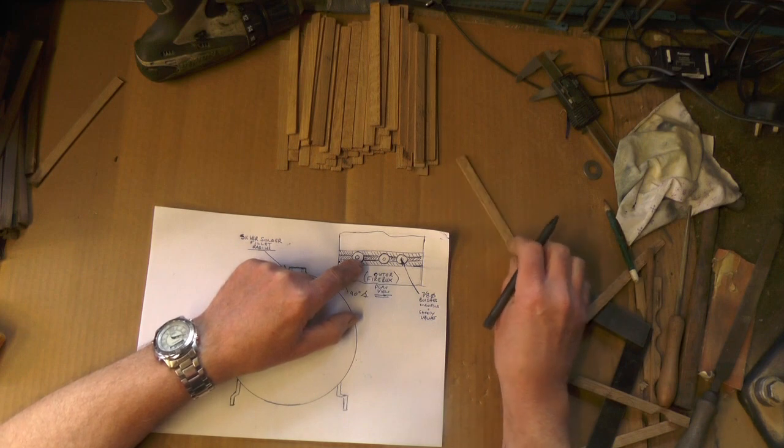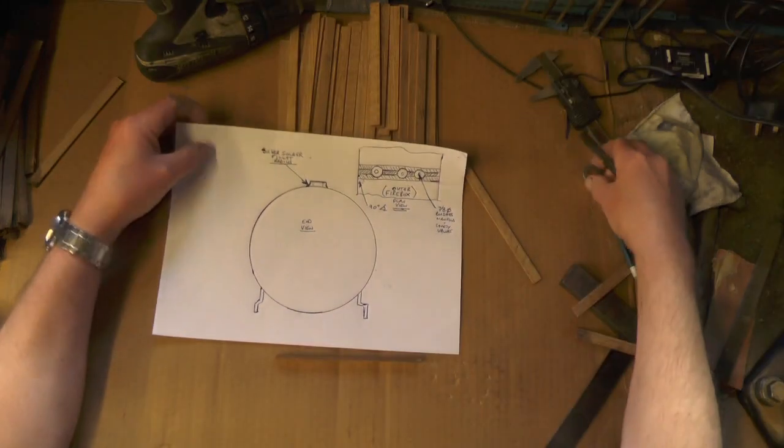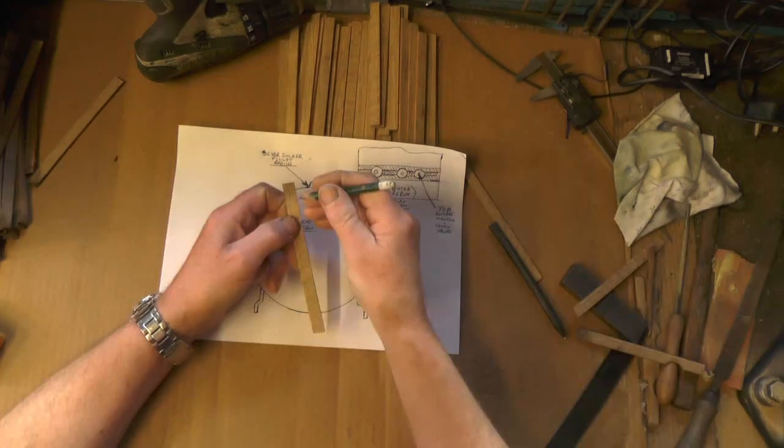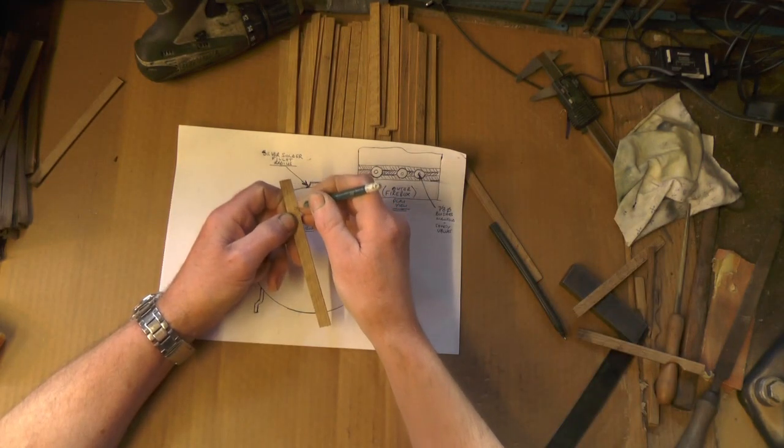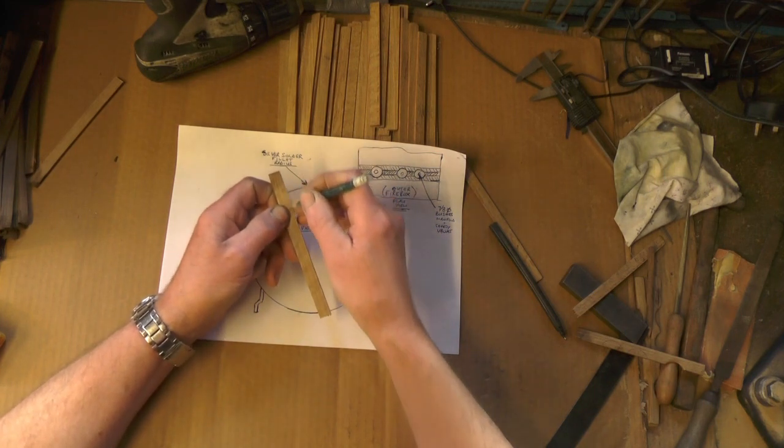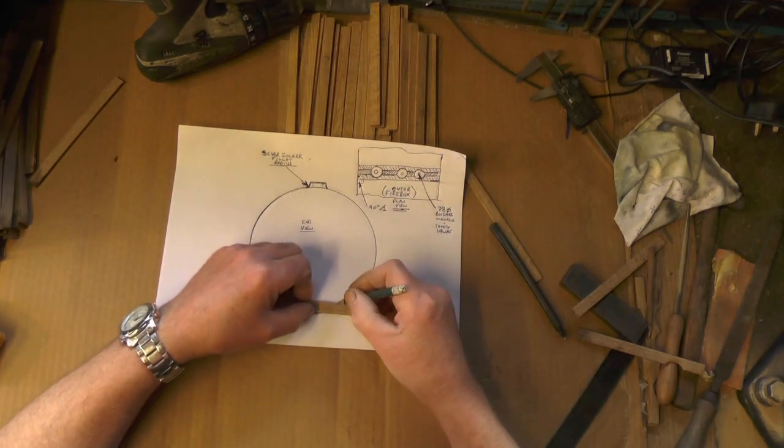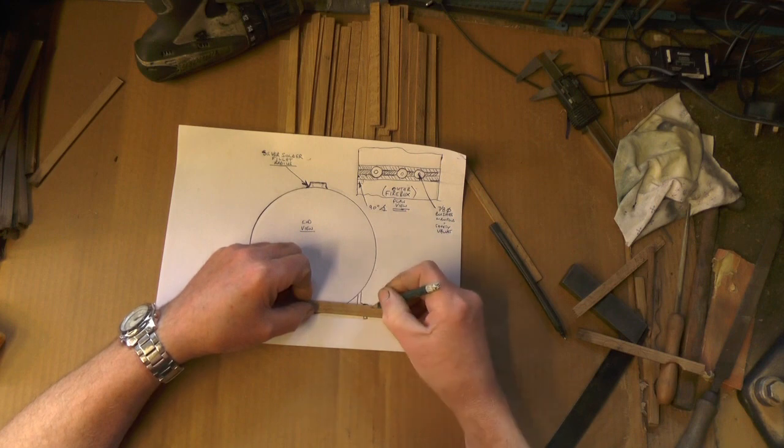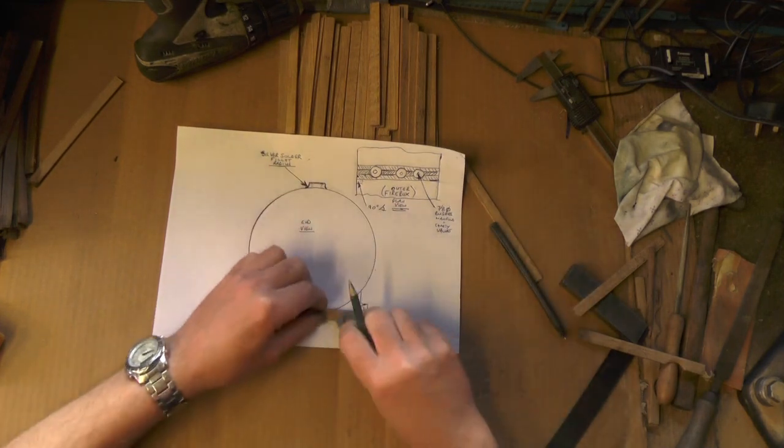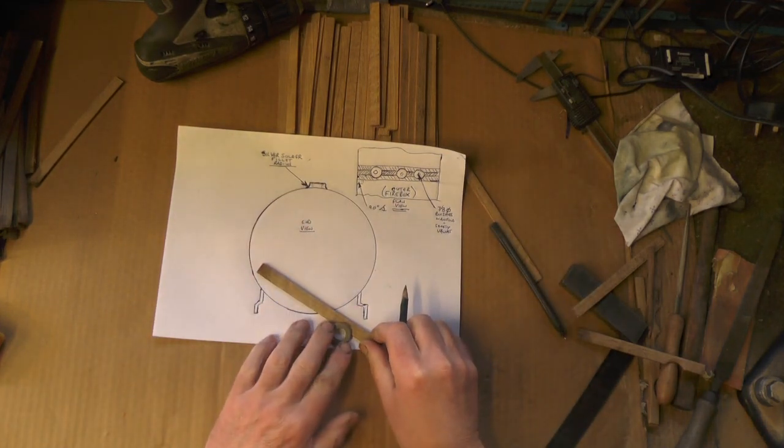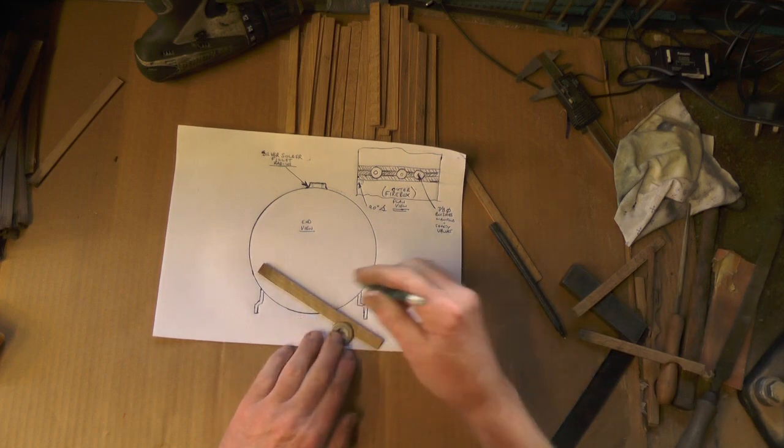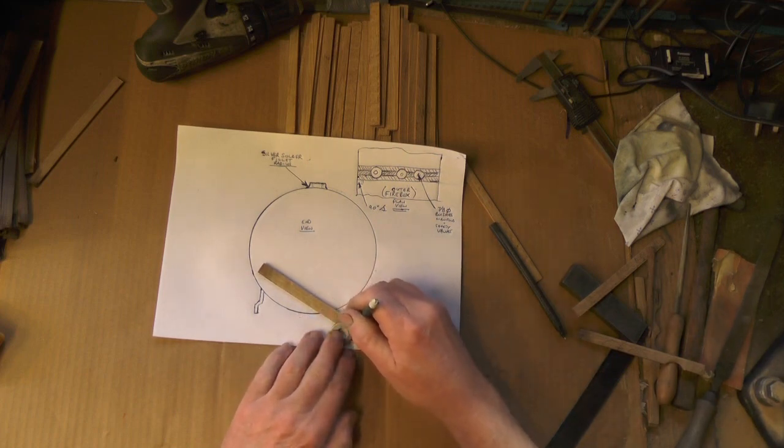These bushes on mine are 7/8ths. I've just got a 7/8ths washer, 7/8ths diameter. I'm going to put a line on the wood to the depth that I want the radius to be. And then where I've marked where my bushes are, I'm just going to put this washer onto the center line of that mark to the depth I need, and just draw around it like that.